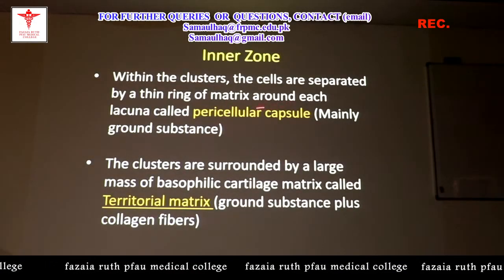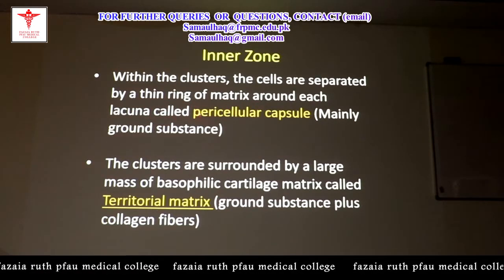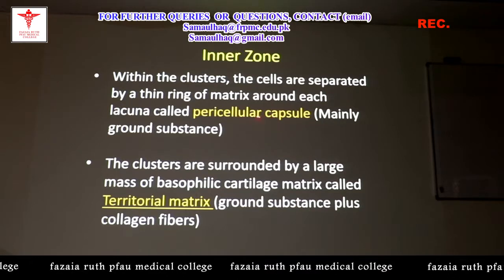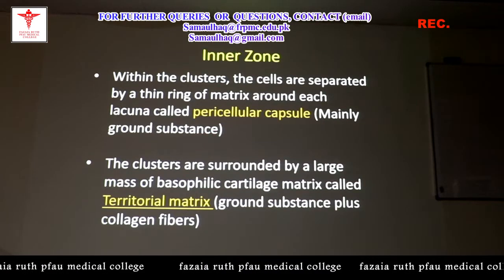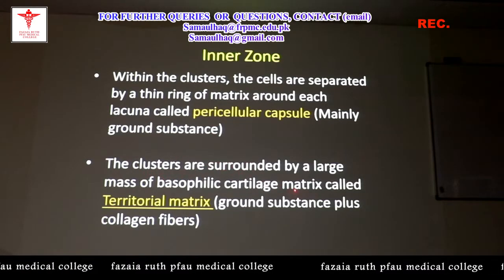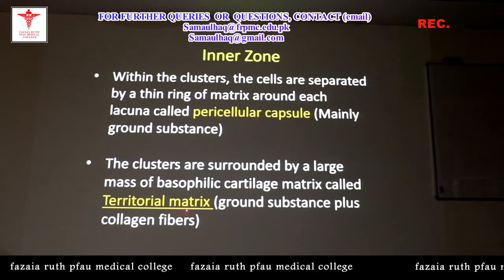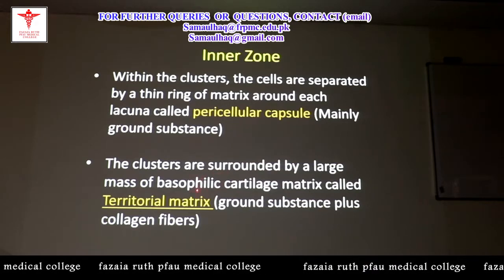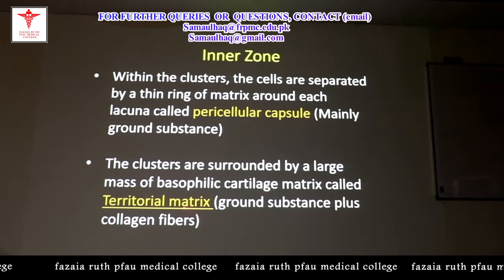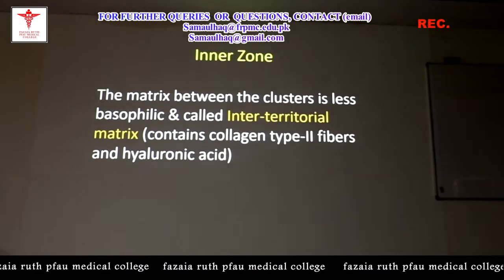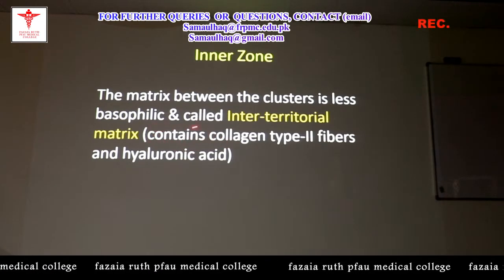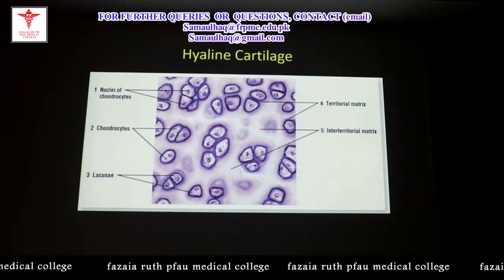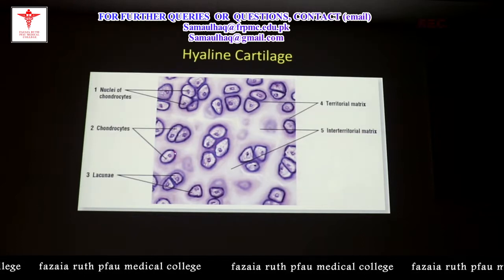Within the clusters, cells are separated by a thin ring of matrix around each lacuna, known as the pericellular capsule. These clusters are surrounded by a large mass of basophilic cartilage matrix named the territorial matrix, which contains ground substance plus collagen fibers. The matrix between clusters is less basophilic and is called the interterritorial matrix, containing collagen type 2 fibers and hyaluronic acid.